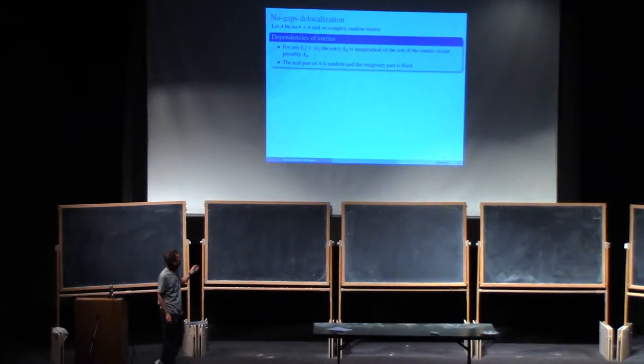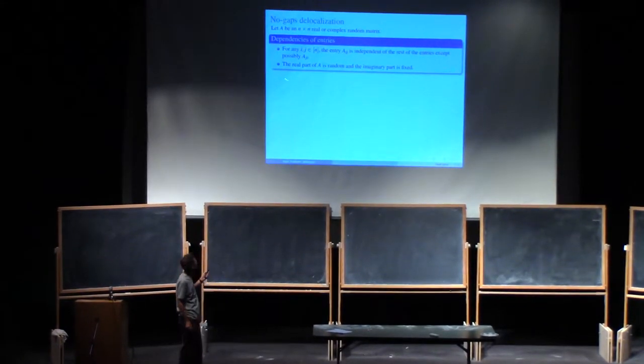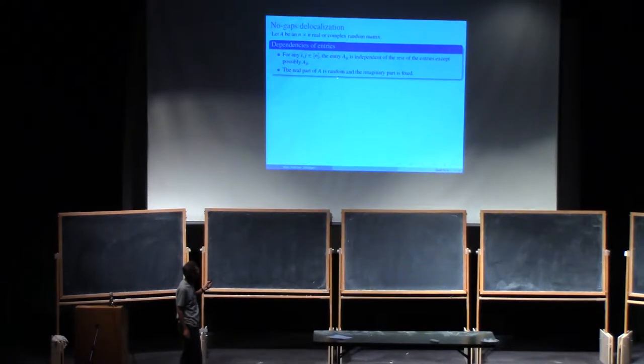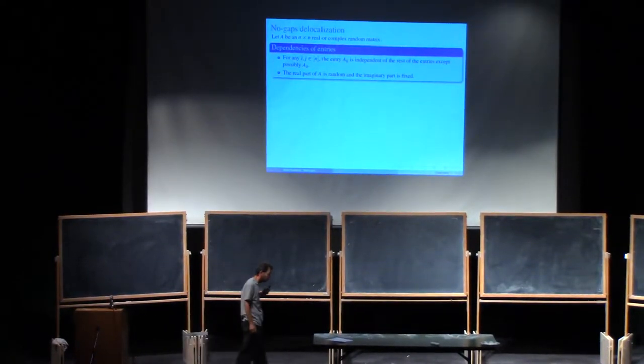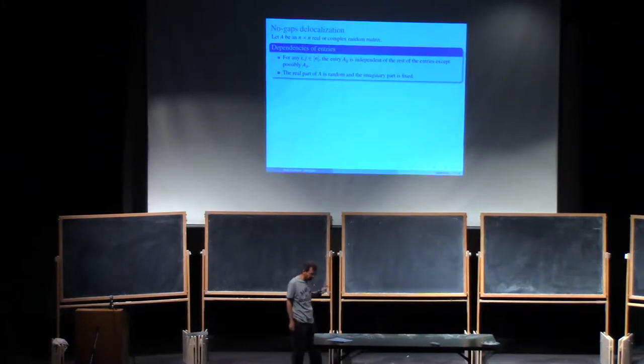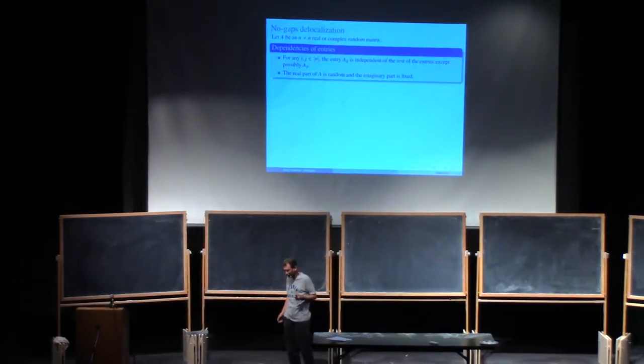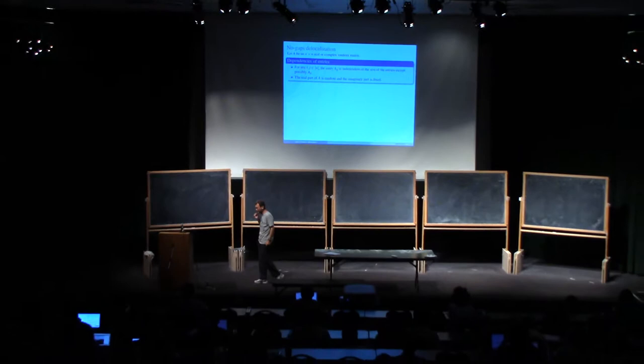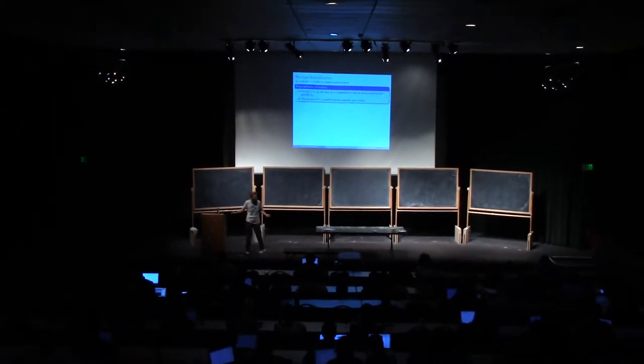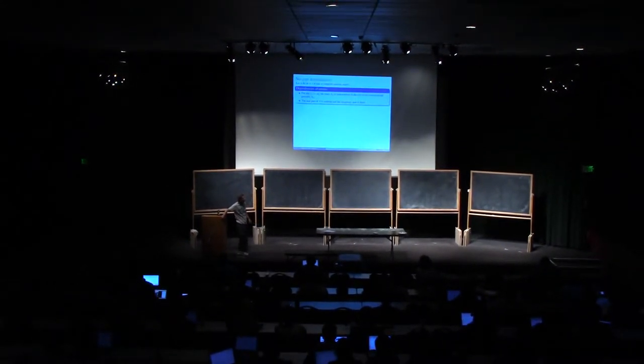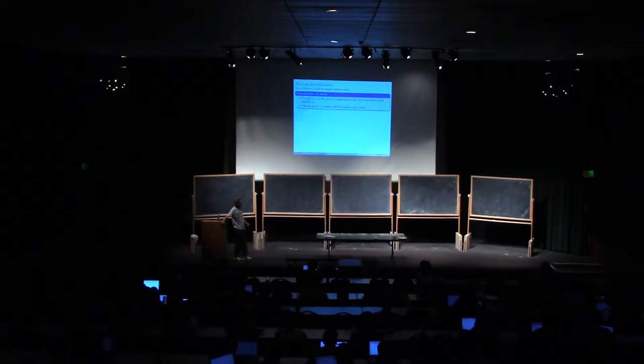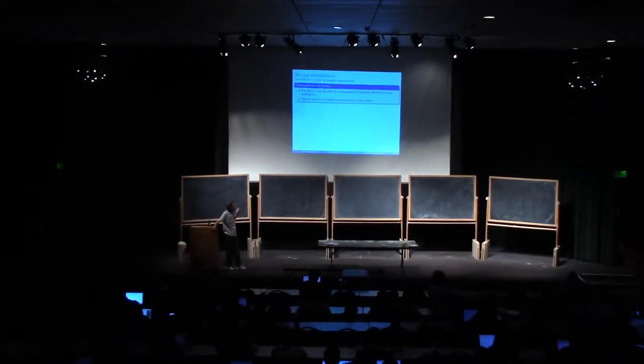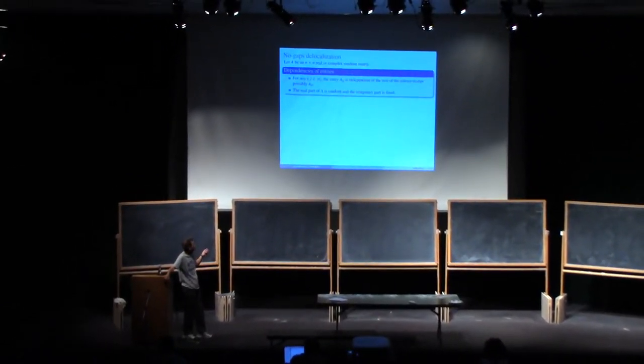The second assumption is that the real part of the matrix is random and the imaginary part is fixed. This looks somewhat artificial, but the aim was to include real matrices where the imaginary part is zero, or complex matrices where the real and imaginary parts are independent. You can condition on the imaginary part and reduce it to this model.